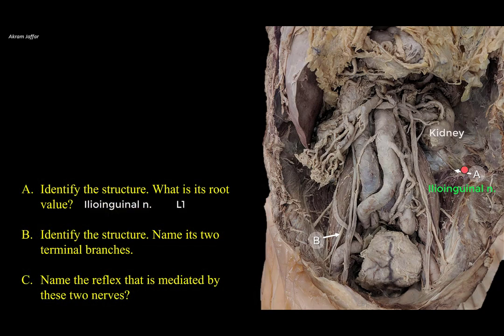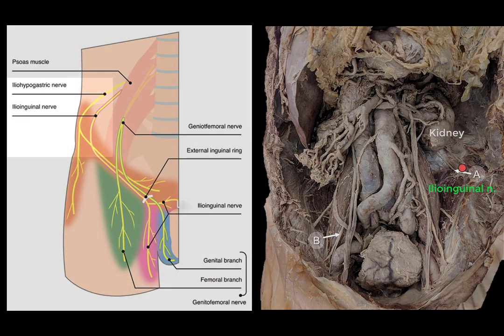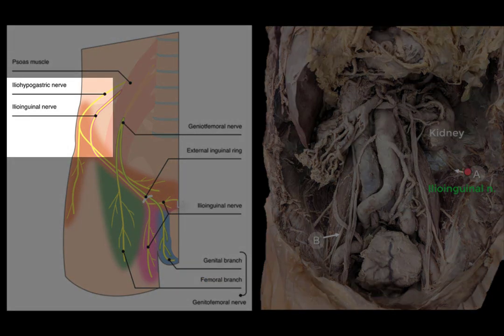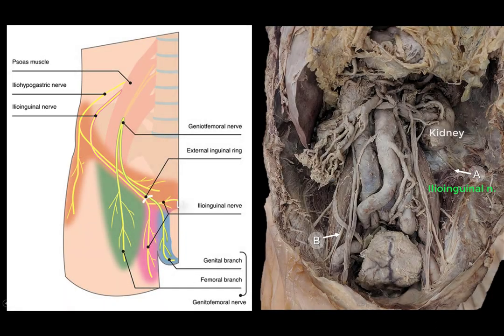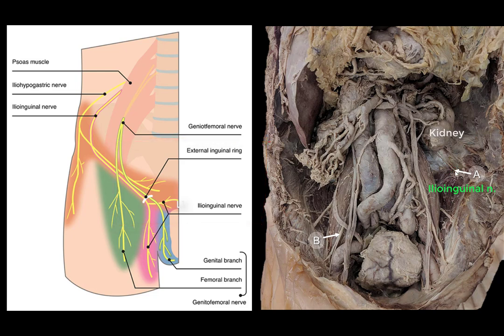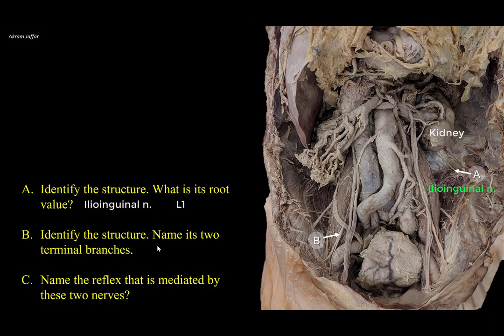Sometimes you can see them separate; sometimes you see a single trunk and then the ilioinguinal splits down from it. Both nerves pass around the anterolateral abdominal wall, piercing the transversus abdominis muscle so they are sandwiched between transversus abdominis and internal oblique — the neurovascular plane. The ilioinguinal nerve enters the inguinal canal and leaves through the superficial inguinal ring, but does not traverse it from deep to superficial. Once it leaves the superficial inguinal ring, it supplies the skin of the scrotum and the upper medial part of the thigh.